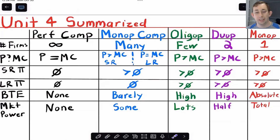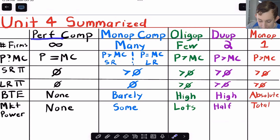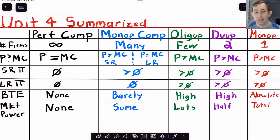For talking about the different types of imperfect competition, I've also included a column about perfect competition which we talked about at the end of Unit 3. I think this table is really helpful for thinking about the different types of imperfect competition and trying to keep all of them straight in your head. Let's go ahead and talk about this row by row.